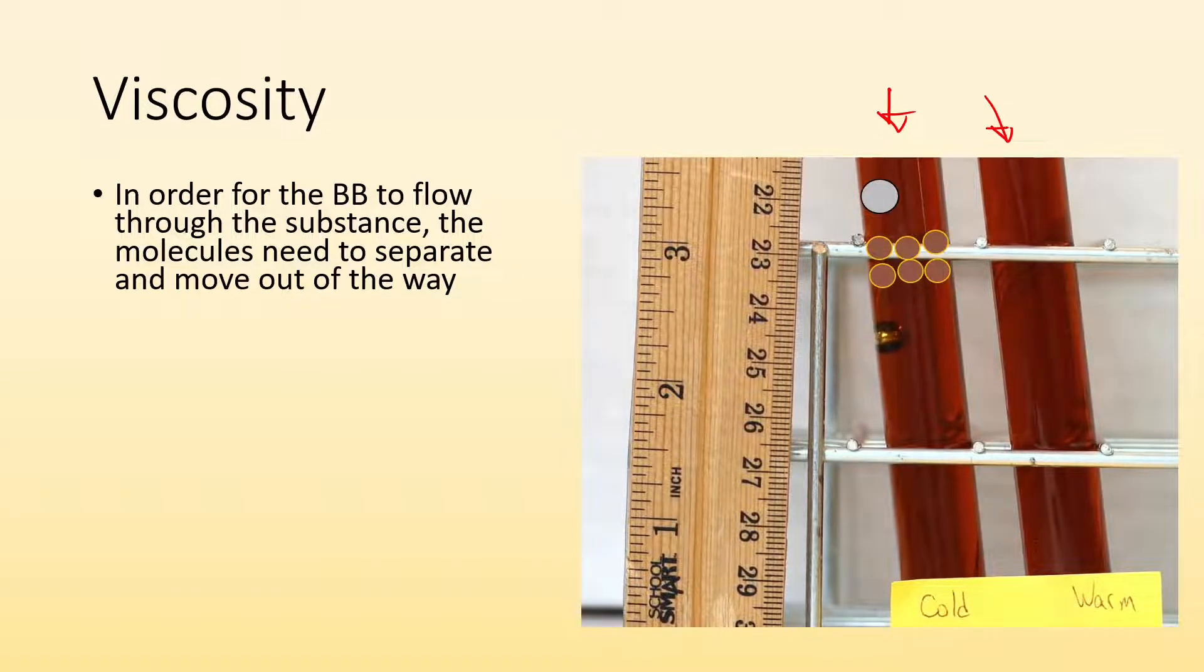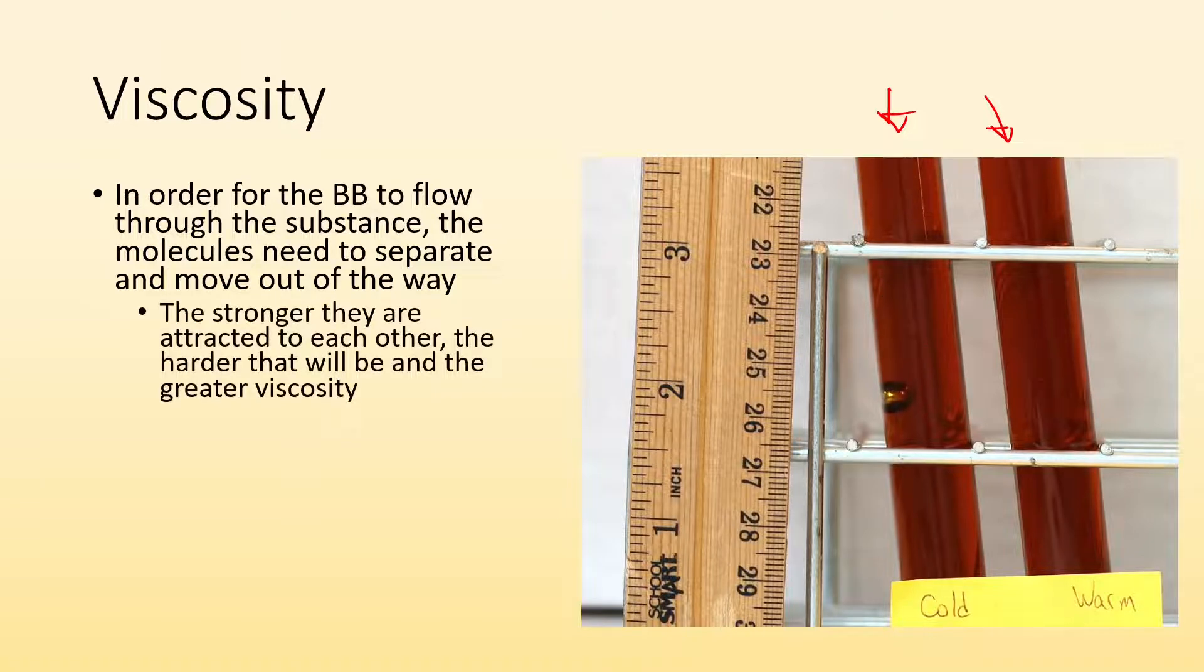Let me animate that. I got that BB flowing through the honey and those honey particles have to get out of the way in order for that BB to continue on. The stronger they are attracted to each other, the harder it will be to make them move out of the way, and the greater the viscosity will be.